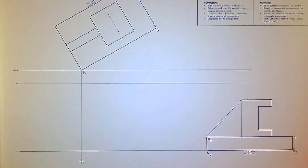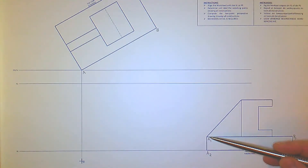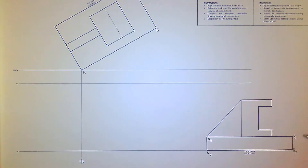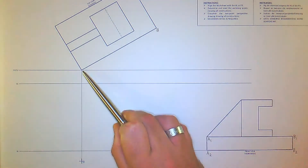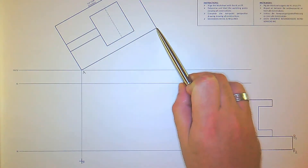For today's exercise we're going to be looking at a two-point perspective model. You can clearly see the front view. I've taken the liberty of marking the base corners as A1, A2, and on the other side B1, B2. Then you'll see the same points also in the top view, point A there and point B.